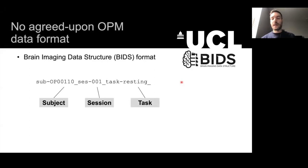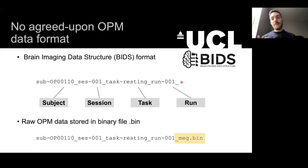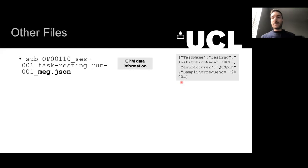So in this example it's a resting recording, along with a run number. At UCL over the past few years, we have been storing the OPM data in a really simple binary file — the data is saved as a .bin. We also have some other files that describe the binary file.